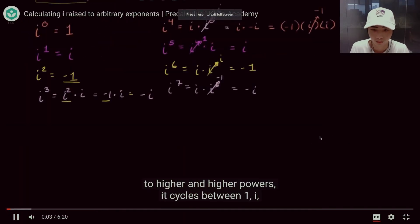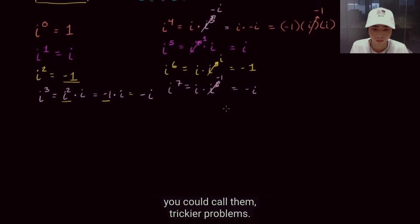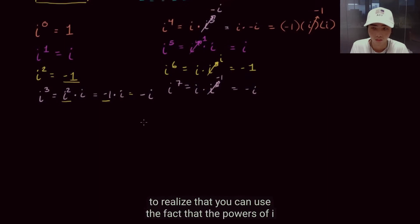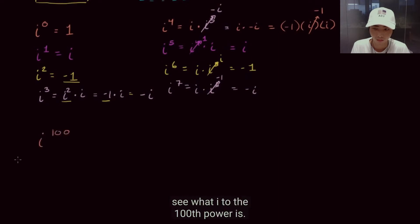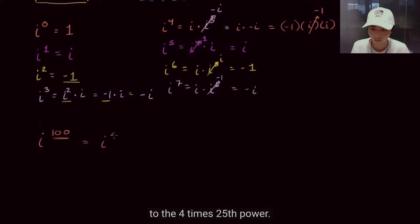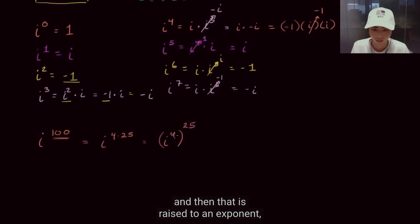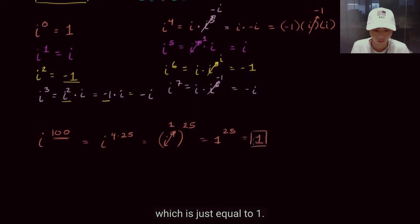Now that we've seen that as we take i to higher and higher powers it cycles between 1, i, negative 1, negative i, then back to 1, i, negative 1, and negative i — let's tackle some trickier problems. You can use the fact that powers of i cycle through these values to take arbitrarily high powers of i on the back of an envelope. Let's see what i to the 100th power is. 100 is a multiple of 4, so this is i to the 4 times 25 power, which is the same as i to the fourth raised to the 25th power. i to the fourth is 1, so this is 1 to the 25th power, which equals 1.